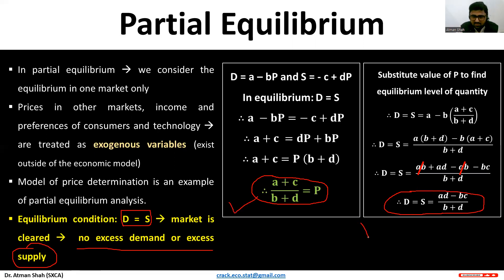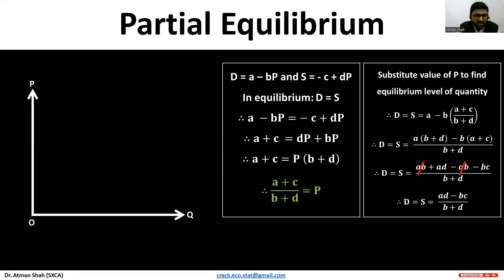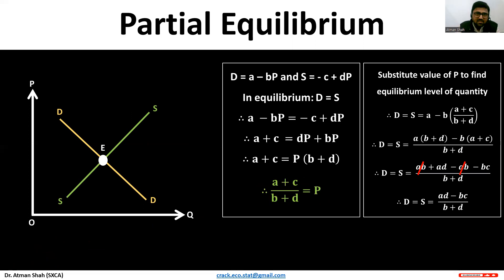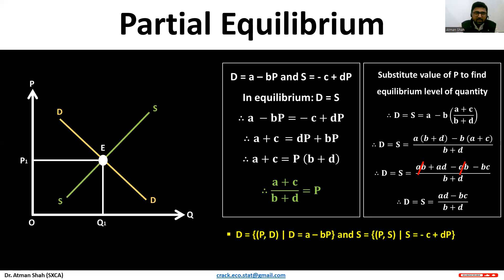This is the equilibrium price and this is the equilibrium quantity. Looking at the diagram: DD is the demand curve, SS is the supply curve, and E is the equilibrium point because at this point demand and supply are equal — both curves intersect at point E. Therefore, equilibrium price is OP1 and equilibrium quantity is OQ1.